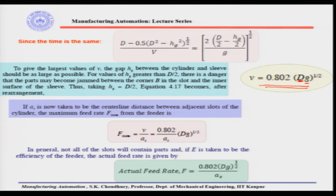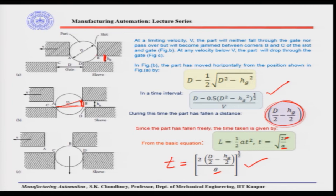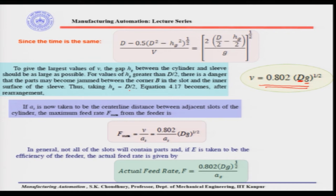For values of hg greater than d/2, however, there is a danger that parts may become jammed between corner b in the slot and the inner surface of the sleeve. If hg is more, the part will jam between b and c or somewhere inside the sleeve. If hg is less than d/2, the part may not go through.